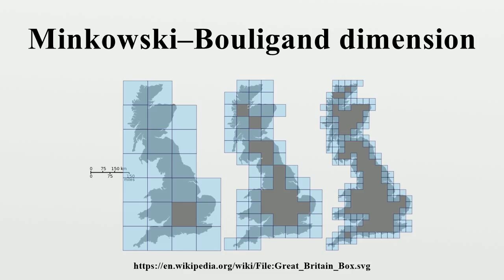If the above limit does not exist, one may still take the limit superior and limit inferior, which respectively define the upper box dimension and lower box dimension. The upper box dimension is sometimes called the entropy dimension, Kolmogorov dimension, Kolmogorov capacity, limit capacity, or upper Minkowski dimension, while the lower box dimension is also called the lower Minkowski dimension.